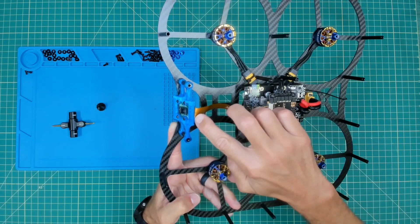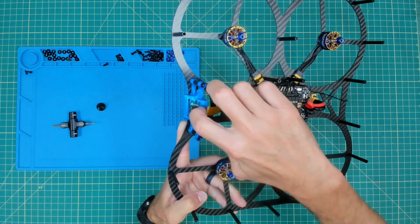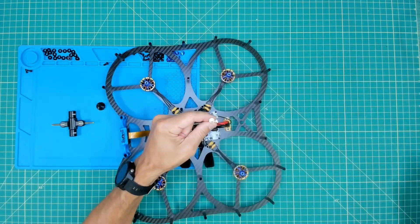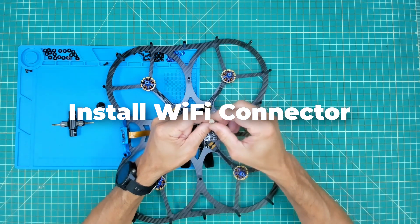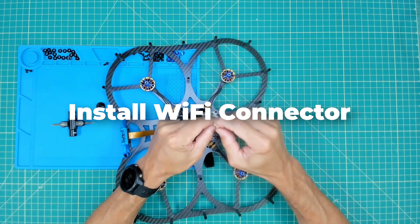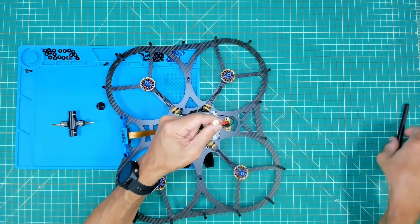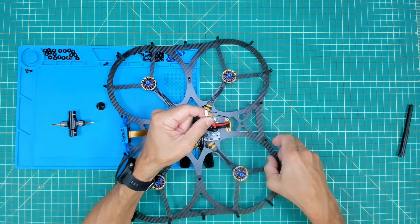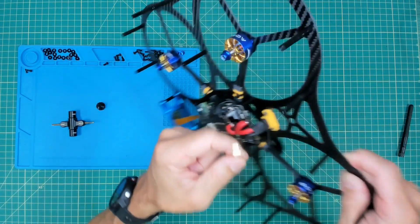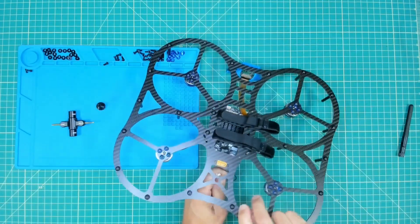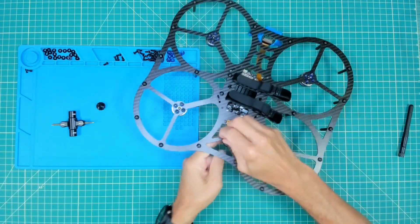Last but not least, we want to install our Wi-Fi SMA connector so we can just easily screw that on. We want that to be accessible through the top plate so I'm going to go ahead and demonstrate where this will go, right here in the rear of the frame.